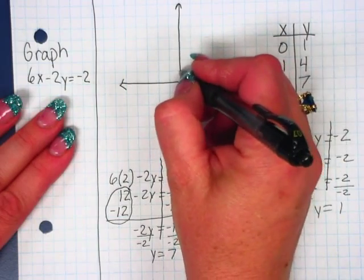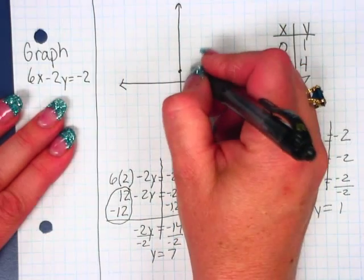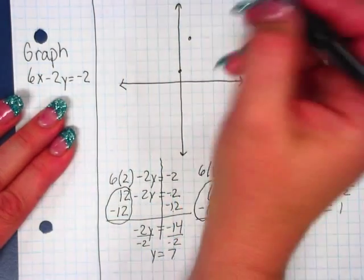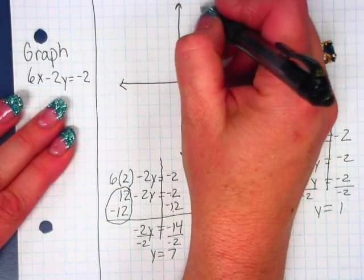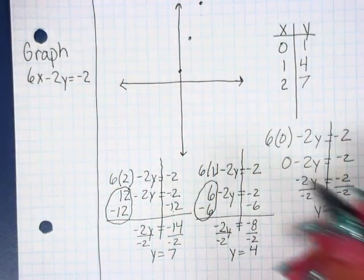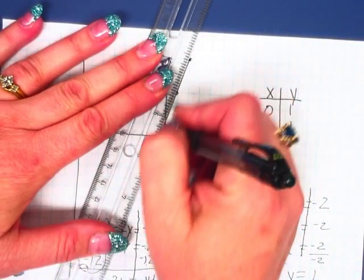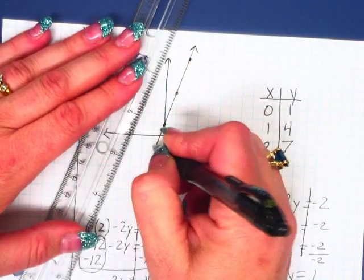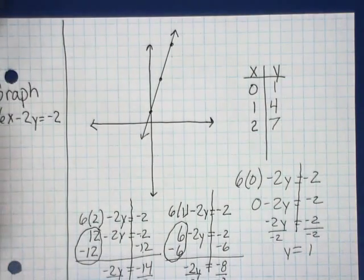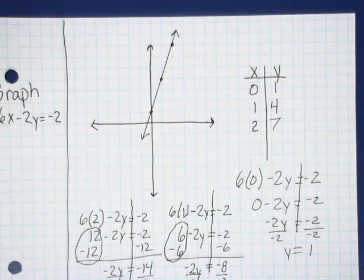So once again, 0, 1. 1, 4. 2, 7. Using my ruler. And you need to either have a ruler or something else that you can do for your straight edge. And arrows on the ends of both.